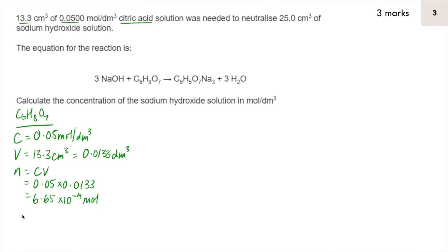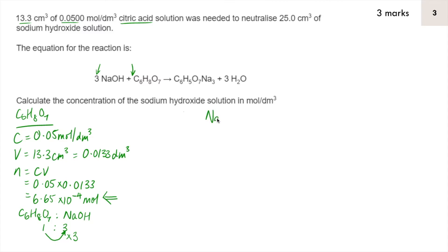The ratio of citric acid to sodium hydroxide is 1 to 3 — there's no coefficient in front of citric acid so that means one, and sodium hydroxide has three. To get from one mole to three moles you multiply by three. So to get the number of moles of sodium hydroxide, we multiply the moles of citric acid by three, giving 6.65 × 10⁻⁴ times 3 equals 1.995 × 10⁻³ moles of NaOH.